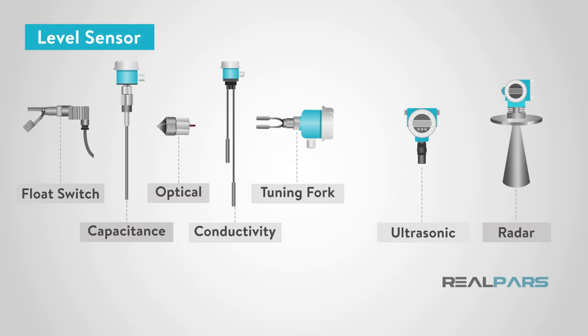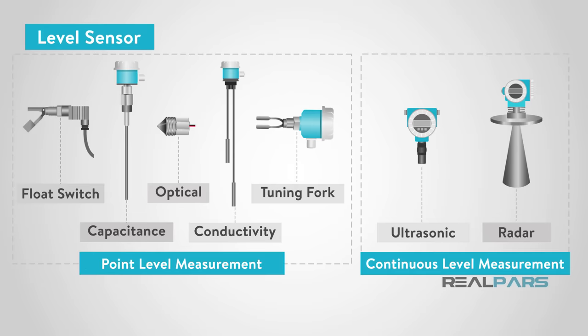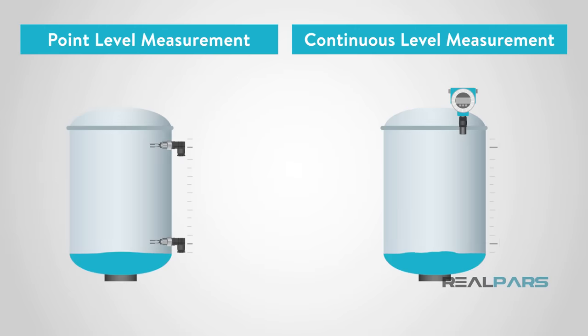Level sensors can be broken into two classifications: Point Level Measurement and Continuous Level Measuring. Point Level Measurement indicates when a product is present at a certain point, and Continuous Level Measuring indicates the continuous level of a product as it rises and falls.